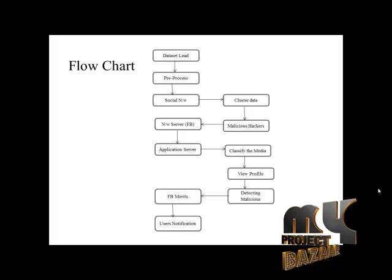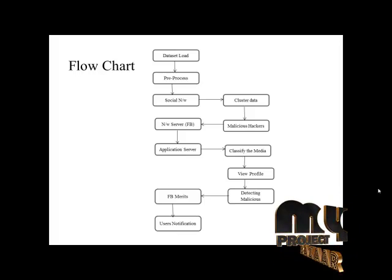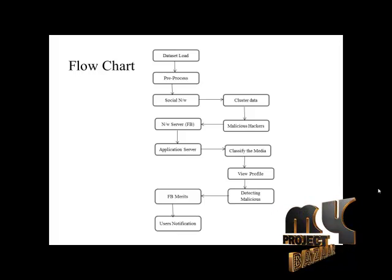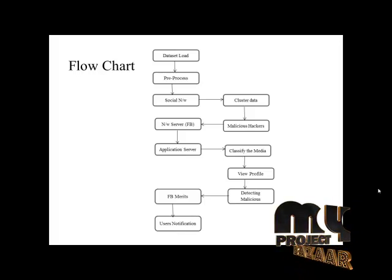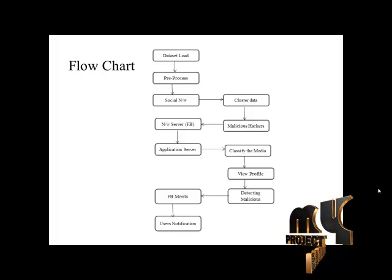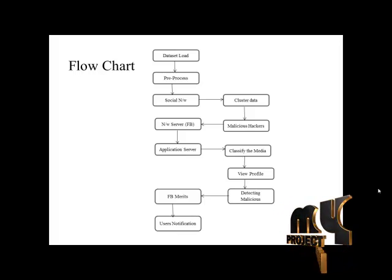This is our flow diagram for detecting malicious Facebook applications in the domain of data mining. The first step is dataset load — we use different attribute-based data to create our own dataset. Next is pre-processing, which is a technique for removing null values. Any null values present in the dataset will be removed during this step.